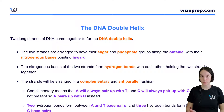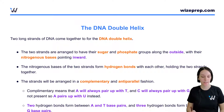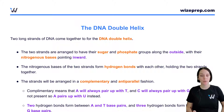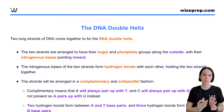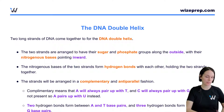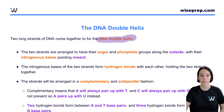Once we've formed these long chains of nucleic acids, and we're talking about DNA, we're going to have two of these long strands that come together to form the DNA double helix. In this lesson we're going to talk about that helix structure.